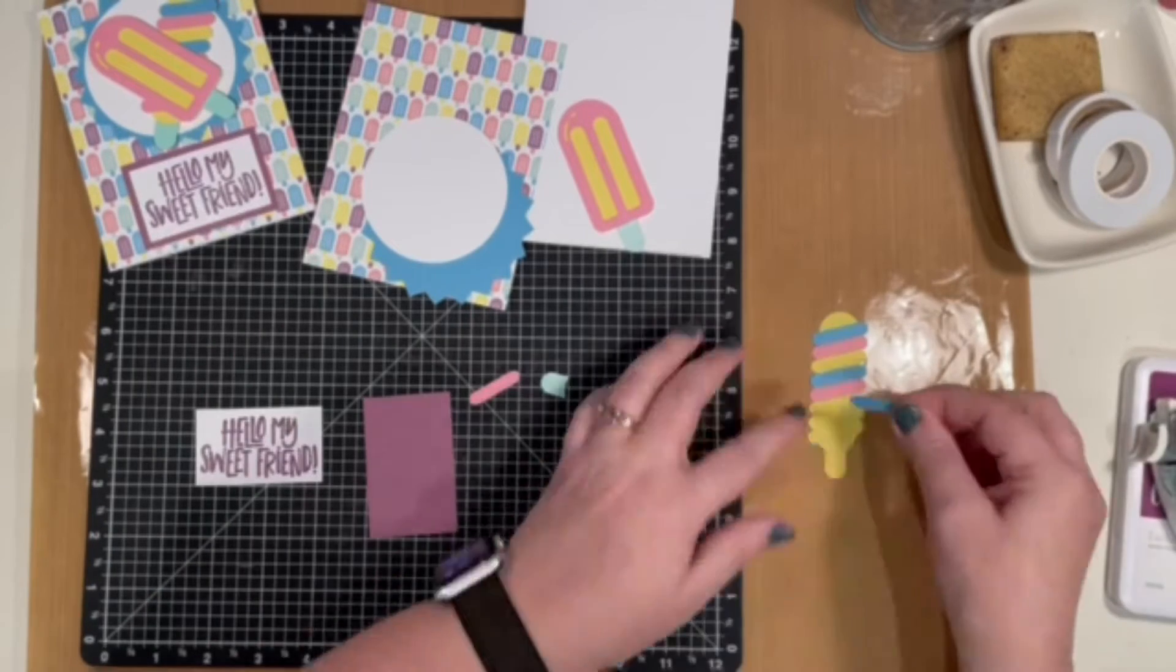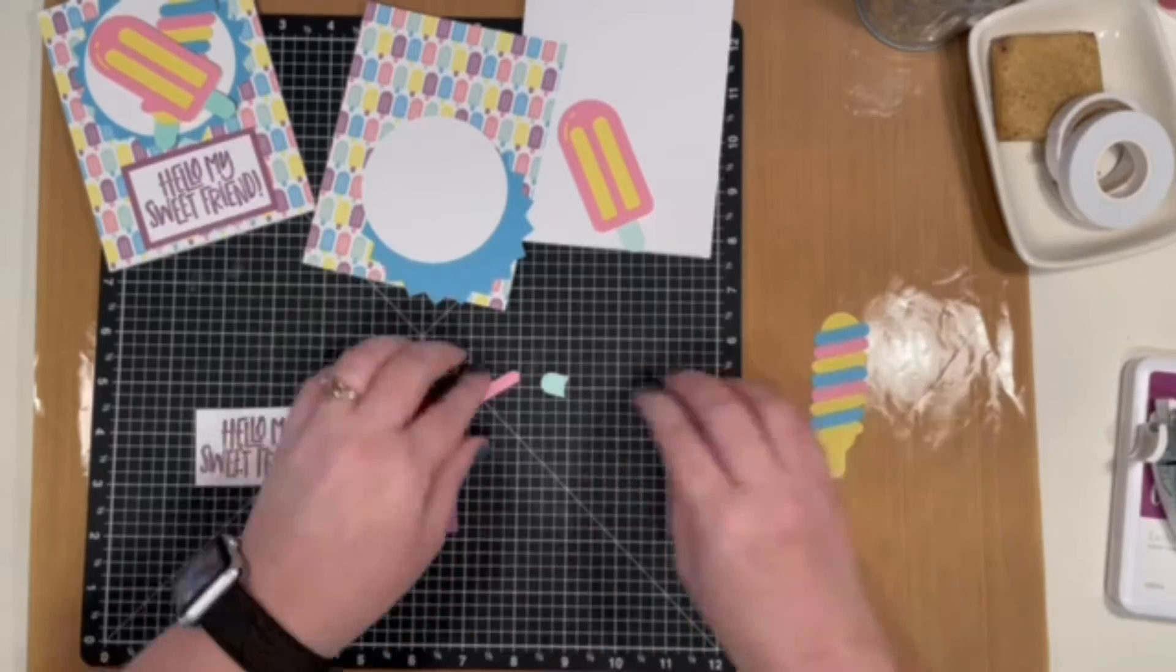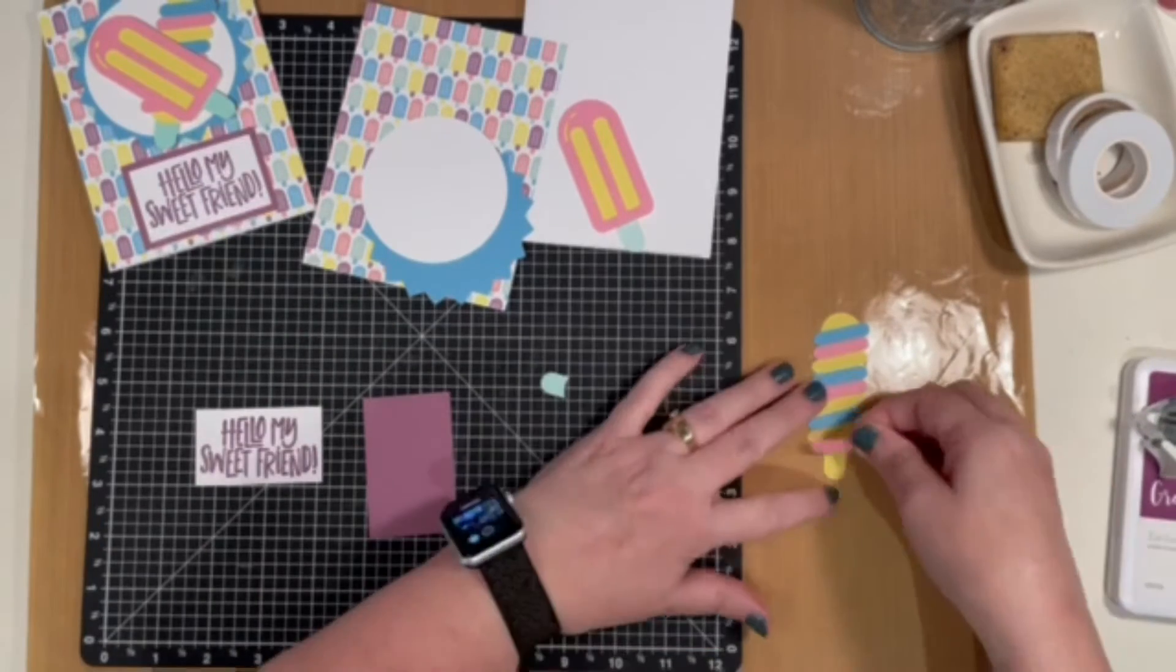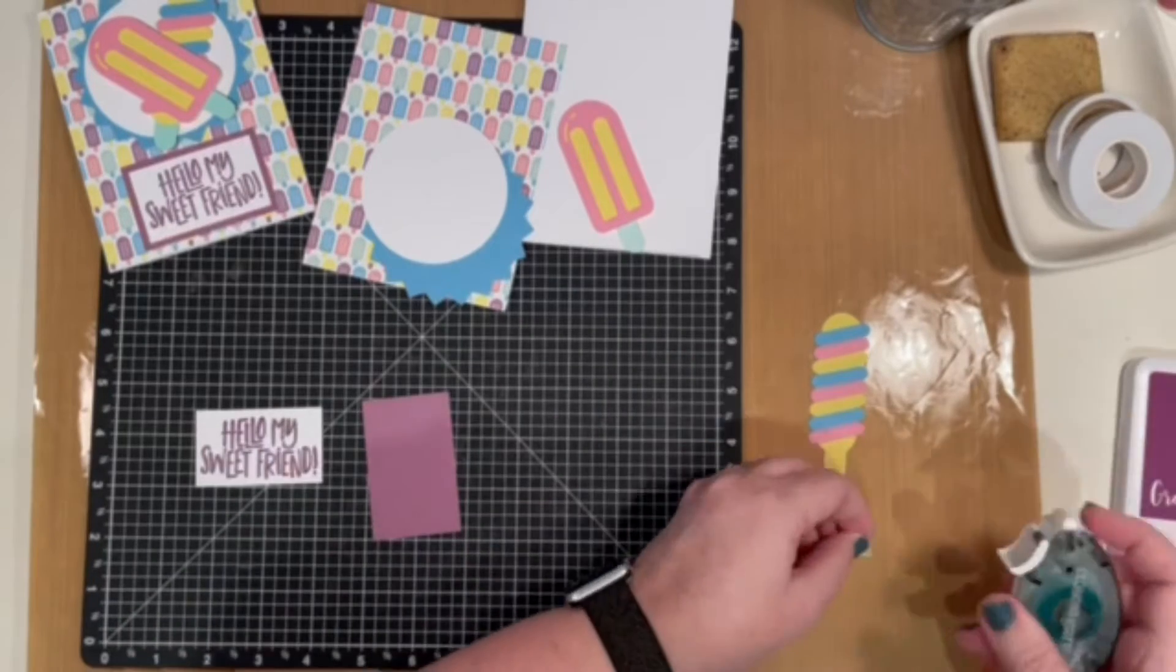Then take the mint cardstock piece. This one's got a little bit of a curve, whereas the one on the other popsicle is straight across. That's how you know which piece is for which popsicle.